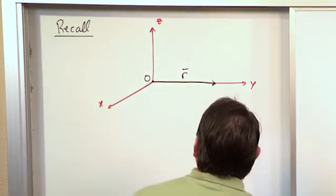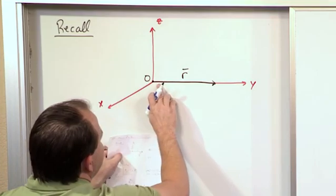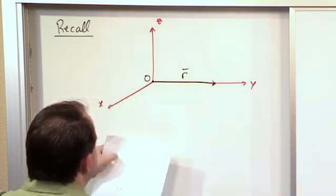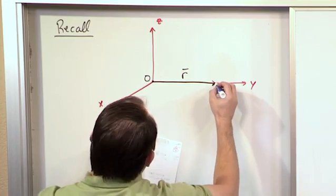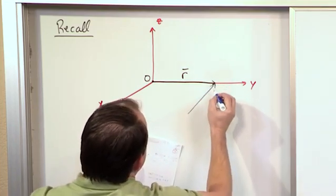Now acting at this point, you can imagine r to be a piece of wood or metal to help visualize it, and then acting at this point in this direction is some force.